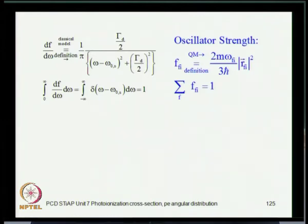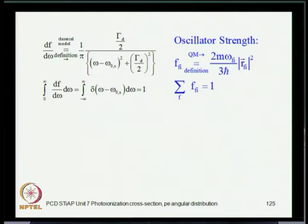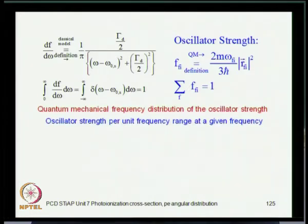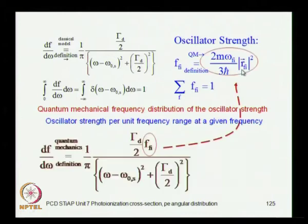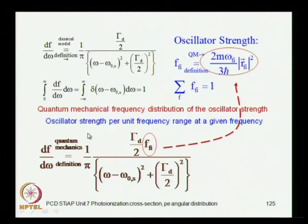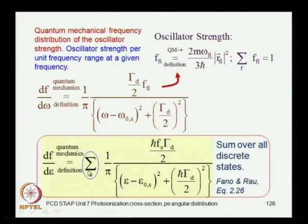We also introduced the oscillator strength — the quantum mechanical oscillator strength for transitions from i to f. In the classical model of photo ionization we had the frequency distribution of the oscillator strength. There is a corresponding quantum mechanical expression giving the oscillator strength for unit frequency, which is very similar to the classical expression but incorporates the quantum mechanical matrix element of the position operator in the length form. These two relations are combined to get the quantum mechanical description of the oscillator strength, and you need to sum over all possible discrete transitions.